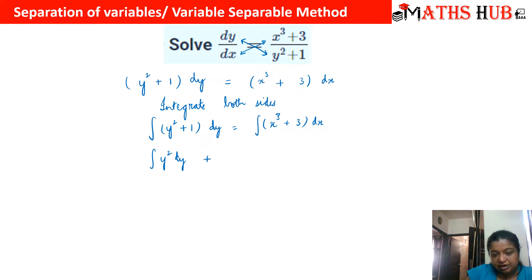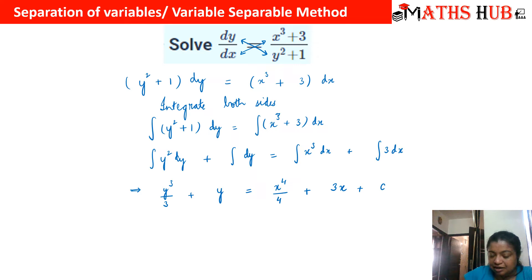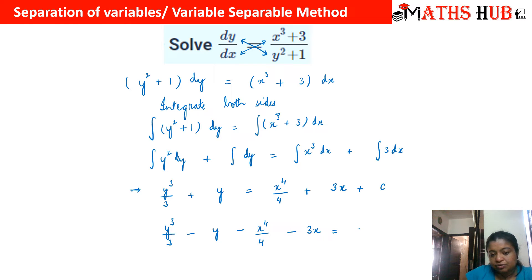We can separate the integrals: ∫y² dy + ∫dy = ∫x³ dx + ∫3 dx. Integrating: y³/3 + y = x⁴/4 + 3x + c, where c is a numerical constant. Taking all terms to the left hand side: y³/3 + y − x⁴/4 − 3x = c, and this is your final answer.